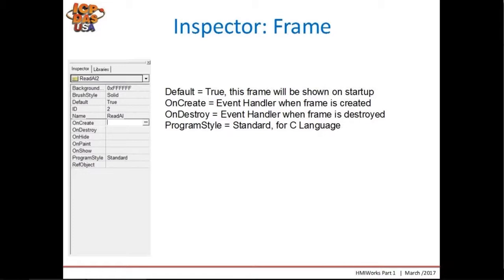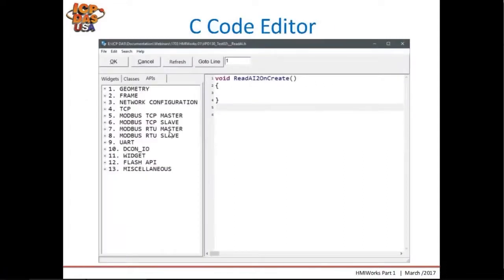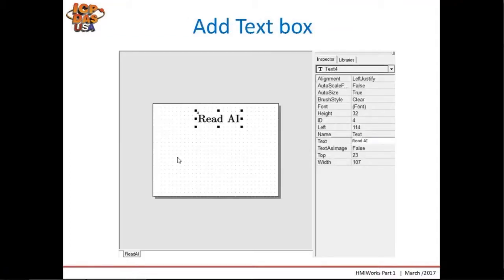With the inspector, you can also create some event handlers — functions that will be executed under certain conditions. The onCreate event handler will be called every time a frame is shown on the screen. So when we power up the touchpad, the Read AI frame will be created and the onCreate event handler will be executed. If you switch to another frame, the onDestroy event handler will be called for Read AI, and the onCreate for the new frame will be called afterwards. When you click on the three dots after the blank space, the IDE will open the code editor, showing the empty event handler where you put your code.